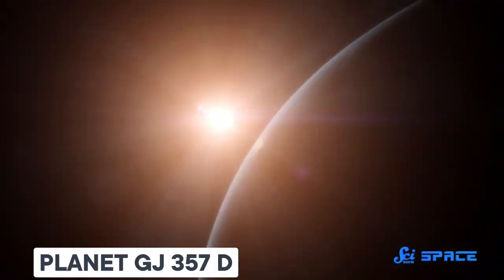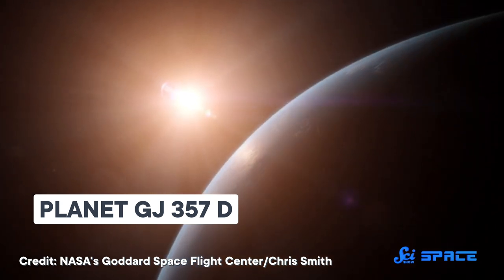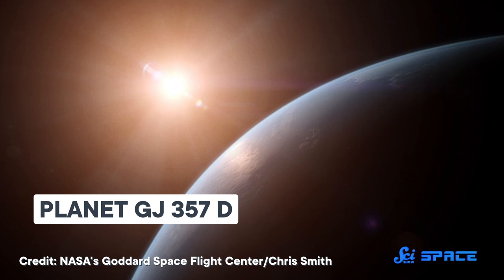If certain conditions on Earth have made it possible for it to support human life, then it makes sense to look for similar things on exoplanets. Based on what we know about Earth, we might expect habitable exoplanets to have bodies of water, land masses, an atmosphere with clouds and oxygen, and vegetation.